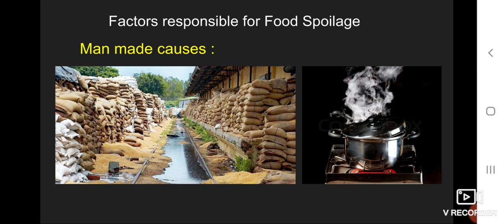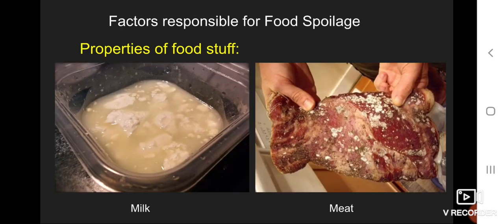The third factor is properties of foodstuff. There are some intrinsic factors within the food materials which result in food spoilage. For example, milk and meat may be acidic or alkaline and they get spoiled easily and very early.